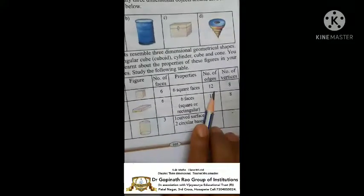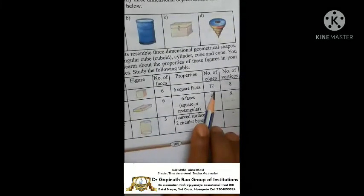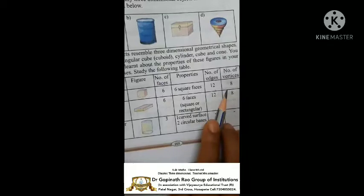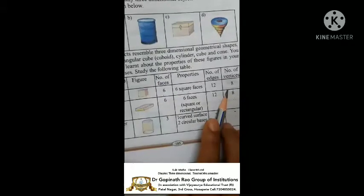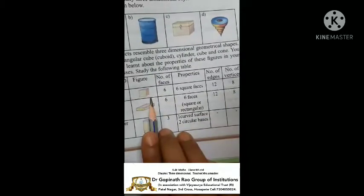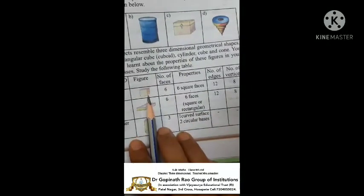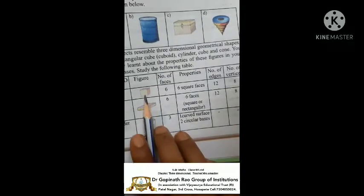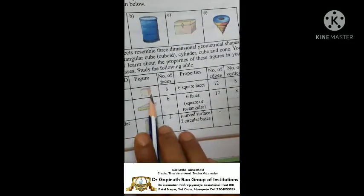Next, number of edges: 12. Number of vertices: 8. You can observe the figure — faces, side view, top view — I will count.